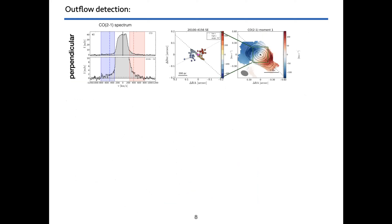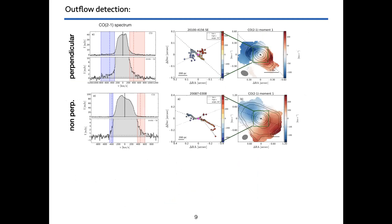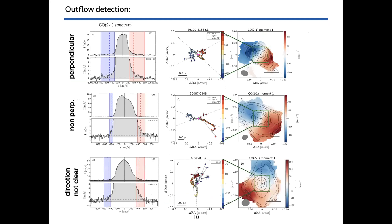In our sample we found different cases. As in this example, we have an outflow which is almost perpendicular to the direction of rotation of the galaxy. We have other cases where we can determine a direction for the outflow but it is not perpendicular. And also a few cases where we identify high velocity gas but we cannot really determine the direction of the outflow, often because it is not well resolved or the red and blue shifted parts partially overlap.